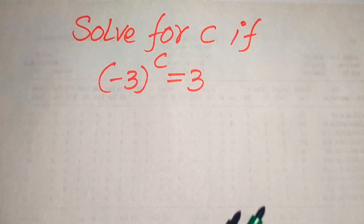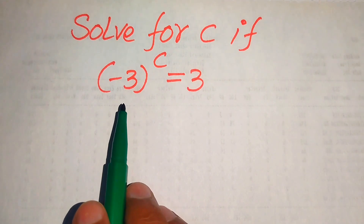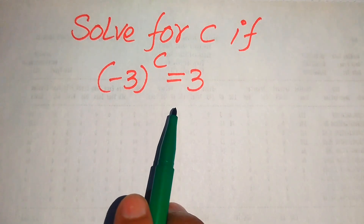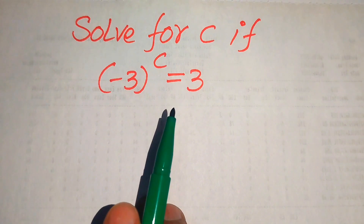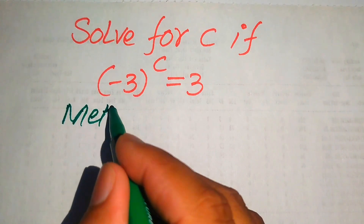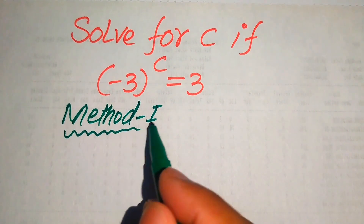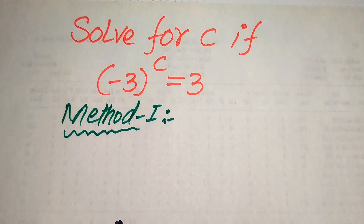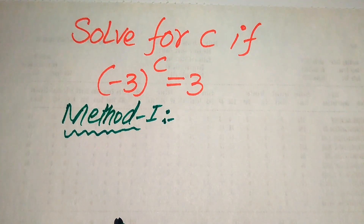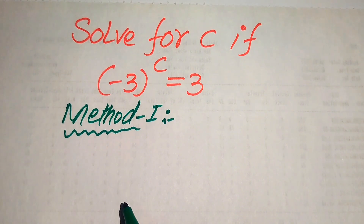Hello everyone. Today I want to show you how to solve this problem for the values of c. Here we have minus 3 to the power of c equals 3. We can solve this problem using two methods, and I hope you like both of them. If you have any other method in mind, please don't hesitate to write it in the comment section. In the first method we apply the common logarithm, and in the second method we solve it using Euler's identity and the natural logarithm.